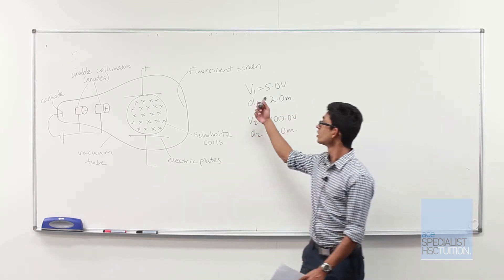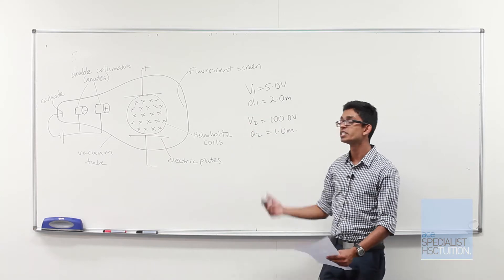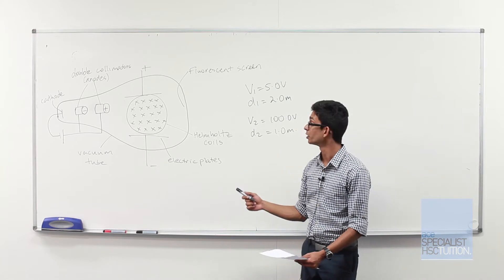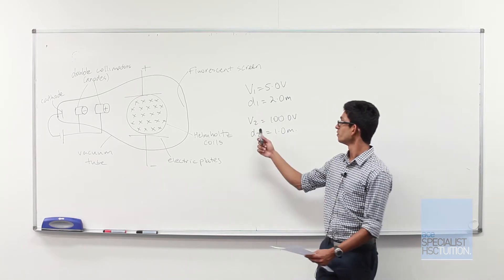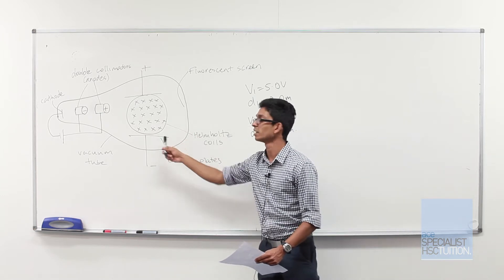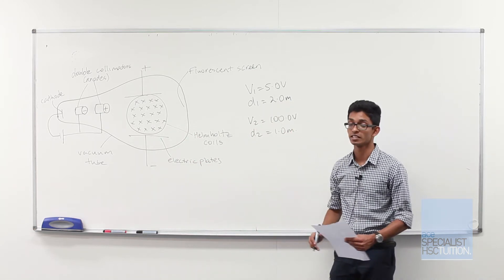The information we're given here is V1 and D1, which specifies the strength of the field between our cathode and our anode and the distance between them, which is 2 metres. V2 and D2 refer to the strength of the electric field between our parallel electric plates, and again, the distance between them.